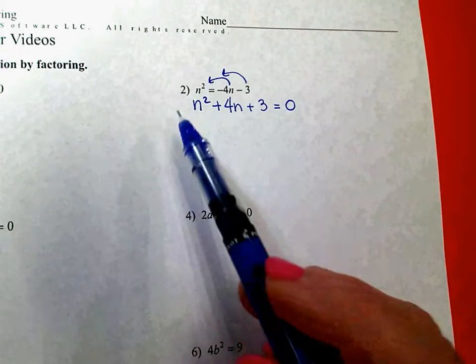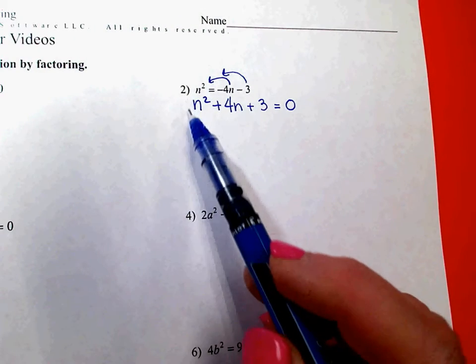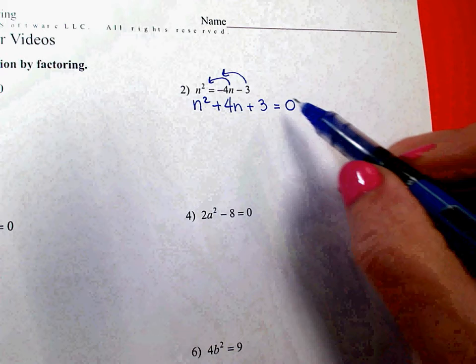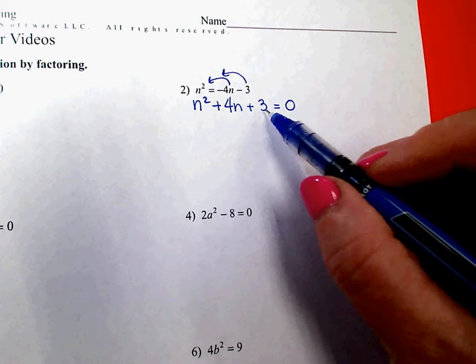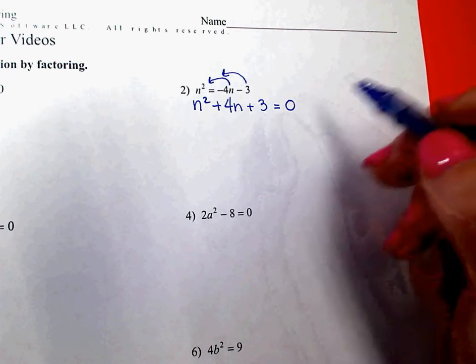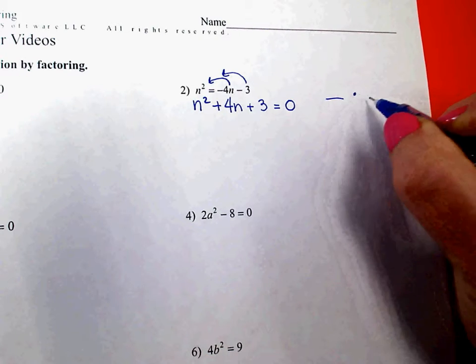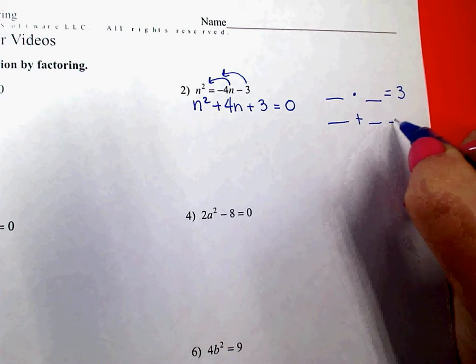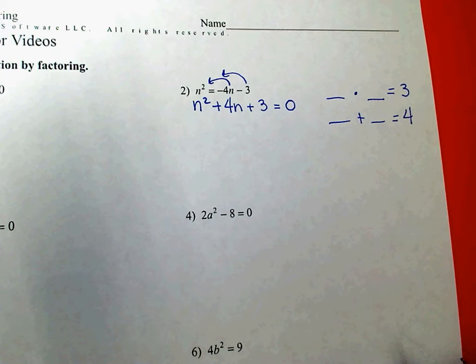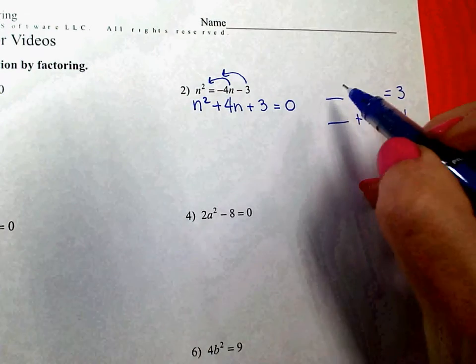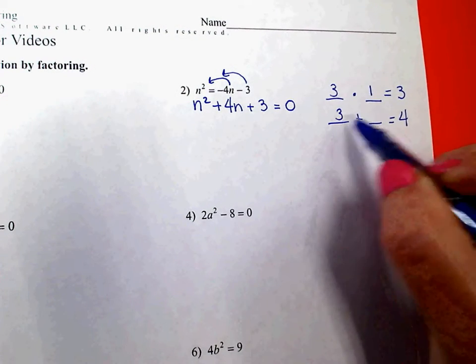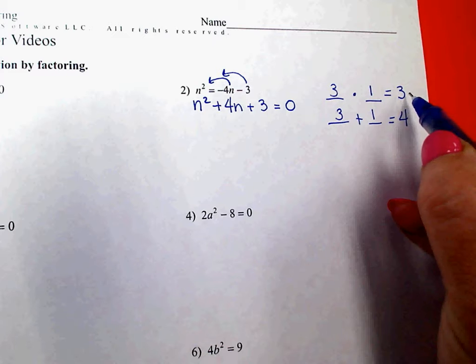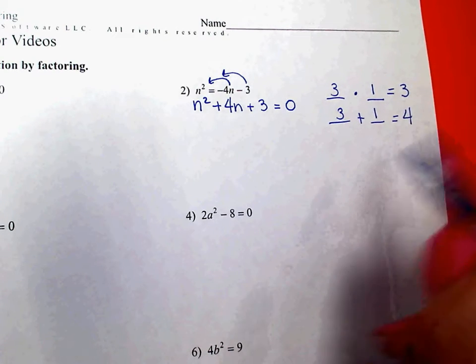This one again does not have a number in front of the n squared except for the understood one, so I'm ready to go straight into factoring, and I'm looking for a pair of factors that multiplies to make 3, positive 3, but at the same time, it adds to make positive 4. Since 3 is a prime number, you don't have a whole lot of options, and I hope that you have already decided that your pair of factors will be 3 and 1, because 3 times 1 equals 3, and 3 plus 1 equals the 4.